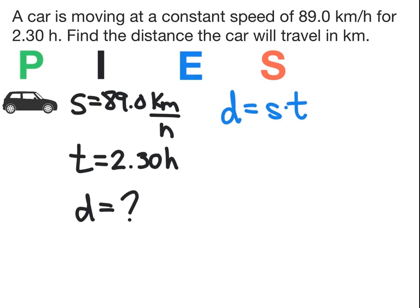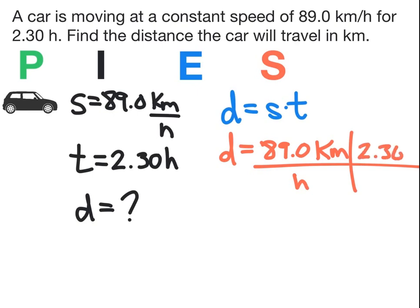We can substitute our numbers for speed and time into distance equals 89.0 km per hour multiplied by time times 2.30 hours. We can look at our units. Hours on top will cancel with hours on bottom. We can rewrite that equation as distance equals 89.0 km multiplied by 2.30.